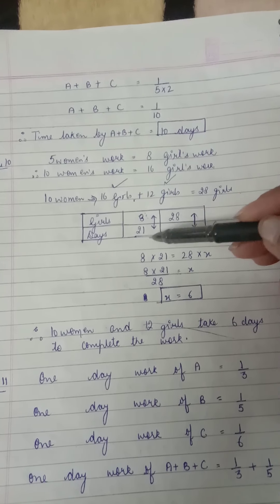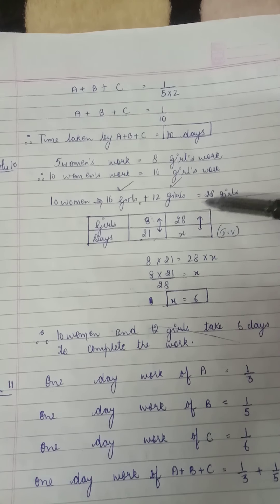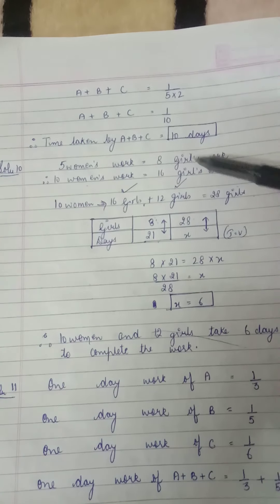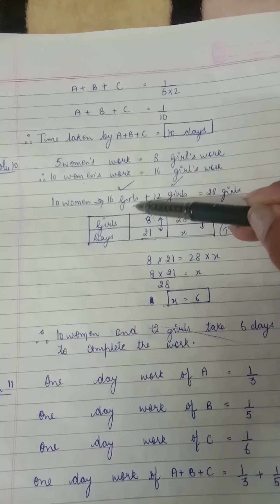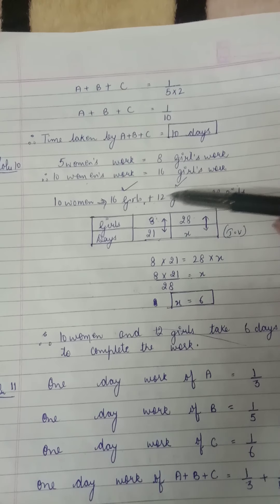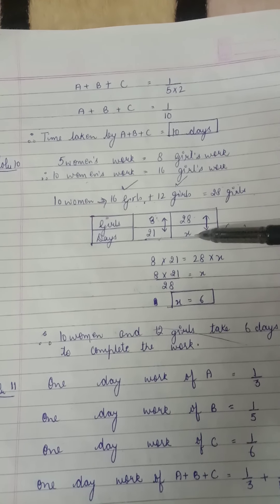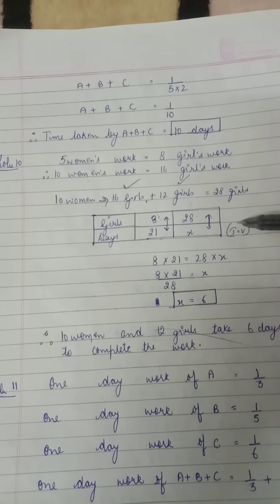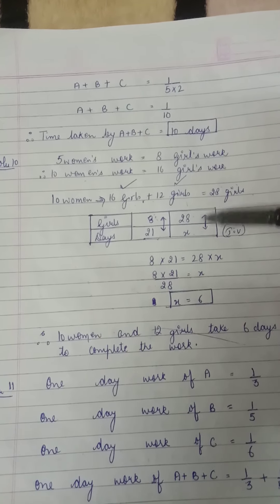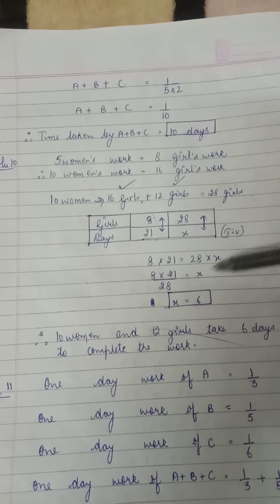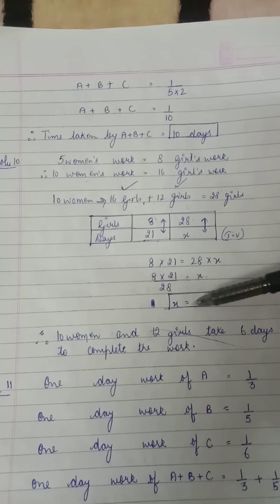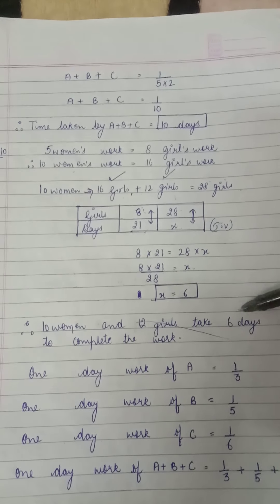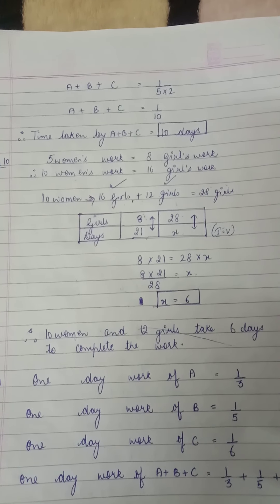If 8 girls are working they take 21 days, and if 28 girls are working they take x days. Girls are more so obviously they'll take less time — that's inverse variation, so straight multiplication: 8 into 21 equals 28 into x. Keeping x and shifting 28 to the other side, the value of x is 6. Therefore 10 women and 12 girls will take 6 days to complete the work.